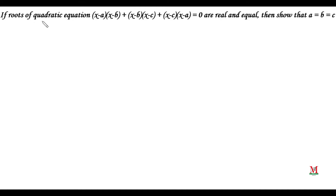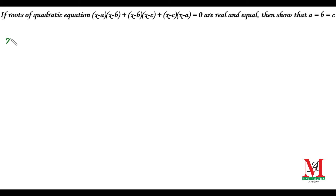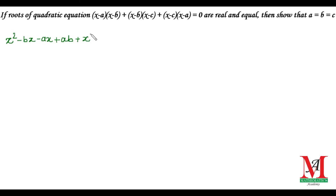Morning greetings from the Mathematics Academy. In this question, we see that the roots of the quadratic equation are real and equal, and the equation is not in proper format. So on multiplying these terms we get x into x as x squared, then x into b is minus bx. Minus a into x is minus ax, and minus a into minus b is plus ab. Similarly, multiplying the next two terms gives x squared minus bx minus cx plus bc.